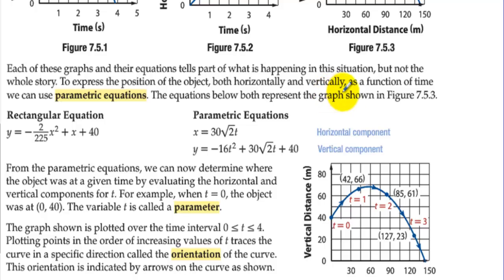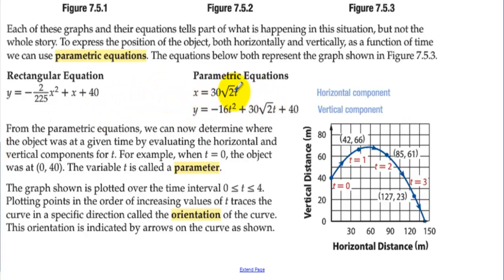The equations below both represent the graph shown in Figure 7.5.3. In rectangular equations, x is the independent and y is the dependent variable, and you would get this graph. In a parametric equation, this equation represents the horizontal distance and this equation represents the vertical distance. In order to graph it horizontal versus vertical, you have to have a third variable. From the parametric equations, we can now determine where the object was at a given time by evaluating the horizontal and vertical components for t. For example, when t is 0, the object was at (0, 40).